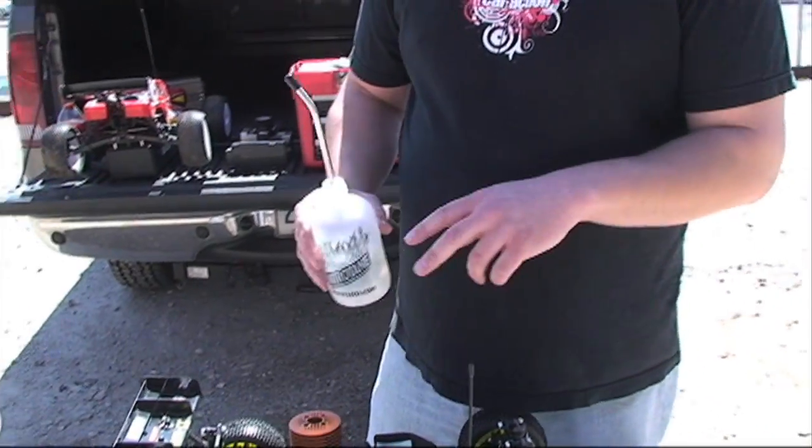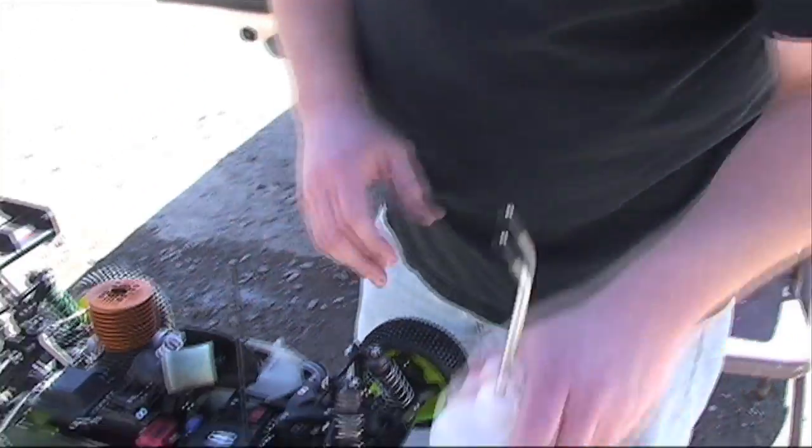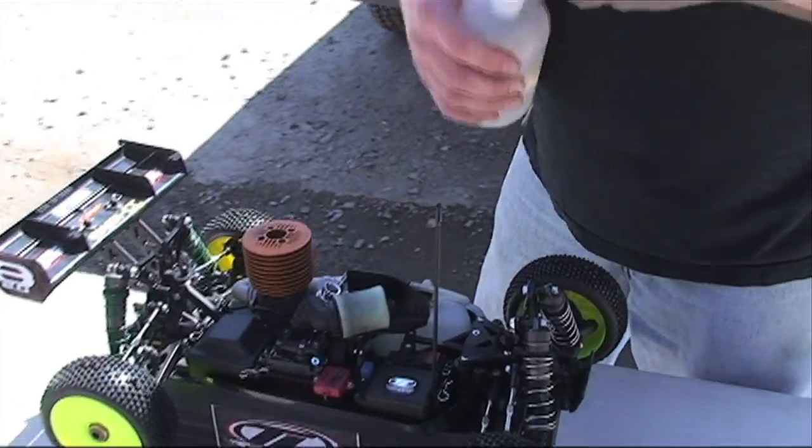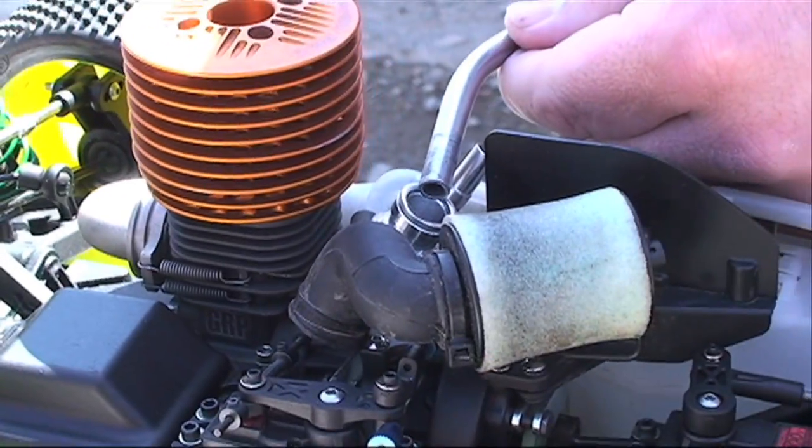Has your nitro plane or car been sitting around all winter? Let's go to Kevin Hetmanski for the best method in getting it up and running the right way. One of the things I like to do first is actually take a little bit of fuel. Put it down on the carburetor and into the combustion chamber. Just a few drops is all you need. What it's going to do is lubricate everything and make sure it loosens up a little bit, makes it a little easier to turn over for you. So we'll just put a few drops, put a little too much, it's okay.